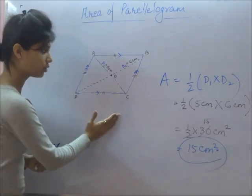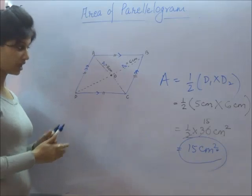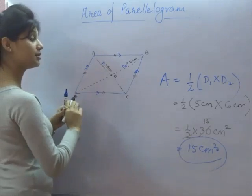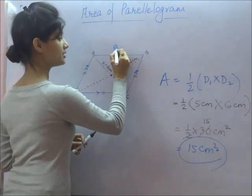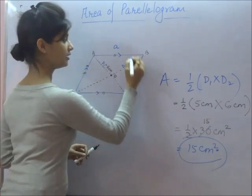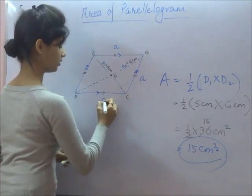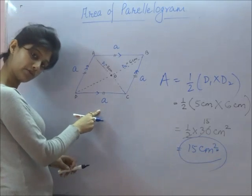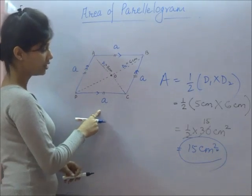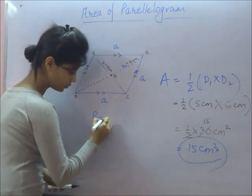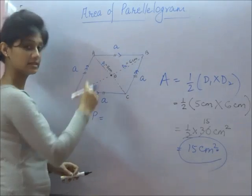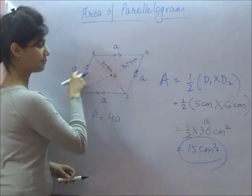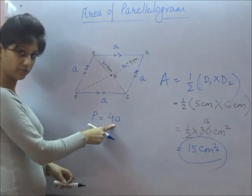Now, a very important thing we have to revisit from the previous video: since all four sides of a rhombus are equal and each side is A, the perimeter is A plus A plus A plus A, which comes out to be 4A.